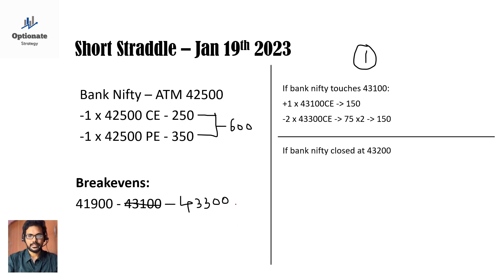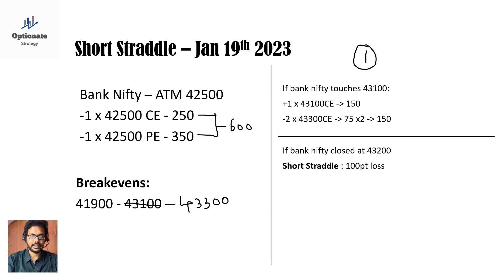Let's check an example: if Bank Nifty closes at 43200 on expiry day, your short straddle will be in a loss of 100 points. We collected 600 rupees so our break-even is 43100, but it closed at 43200, so we lost 100 points.